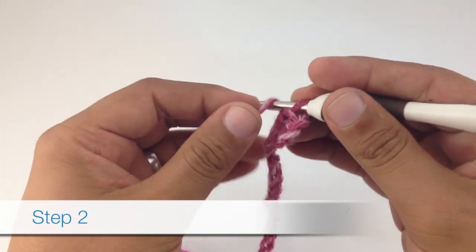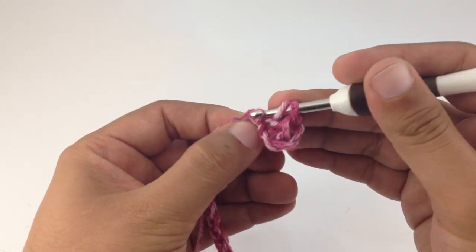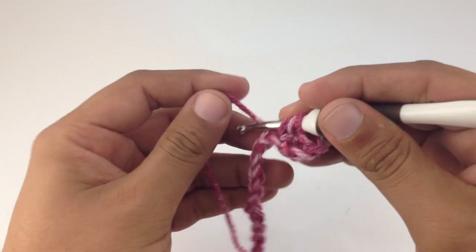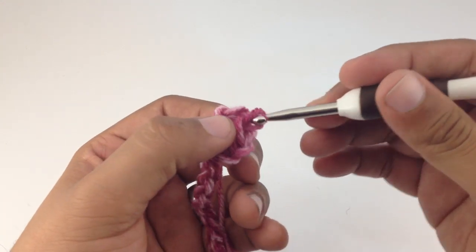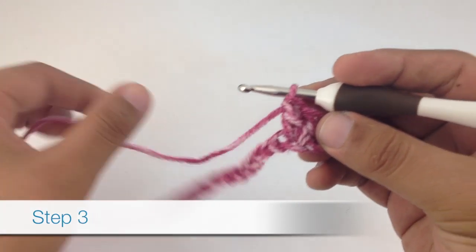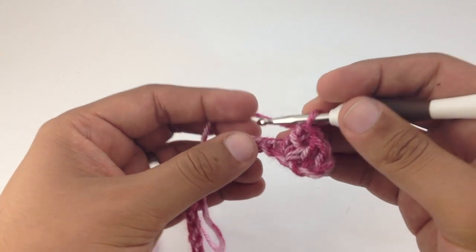For step two we're going to double crochet again into that same stitch. Now for step three we are going to do three double crochets into the next chain stitch.